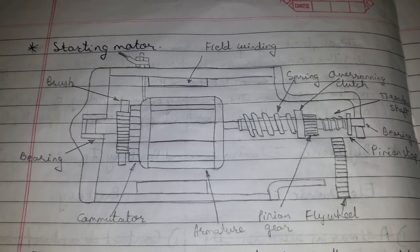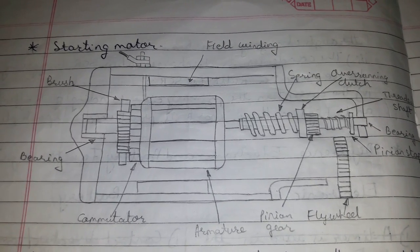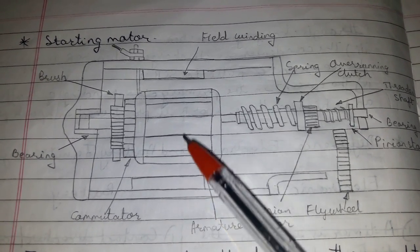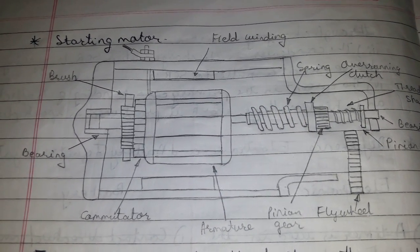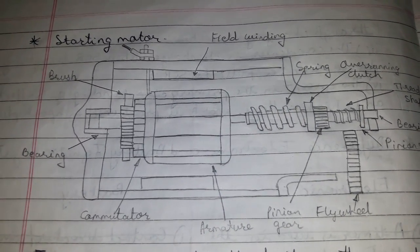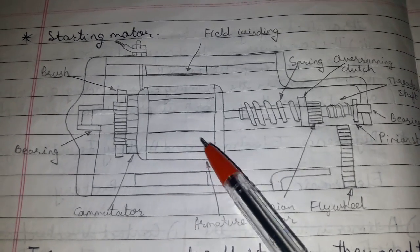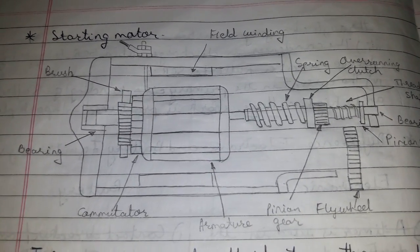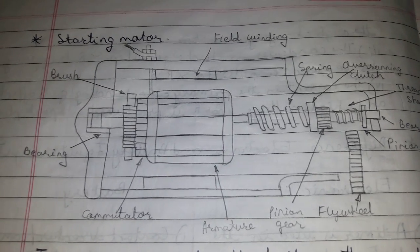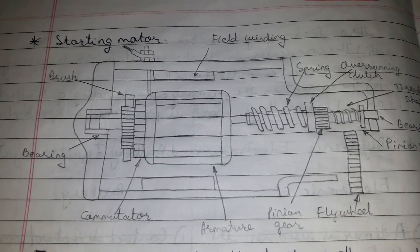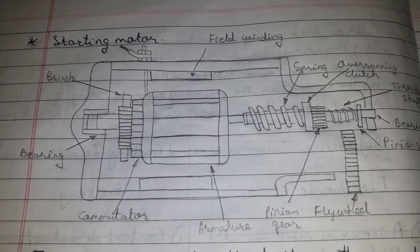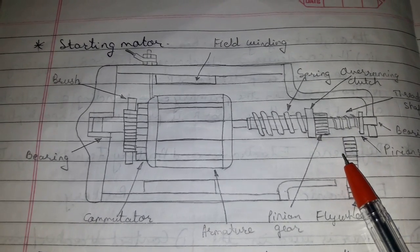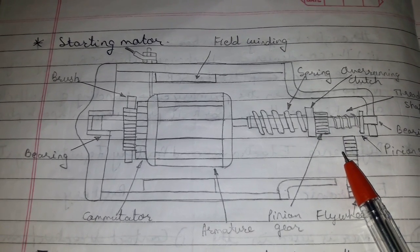Automotive starters have four field coils. Electric current is supplied to the armature through brushes. The starter motor has a driving mechanism to connect the motor shaft pinion to the engine gear while cranking, and to disconnect it when the engine starts working.